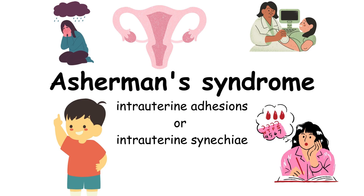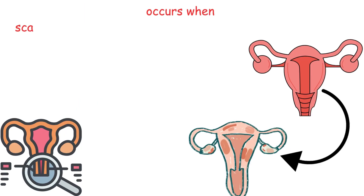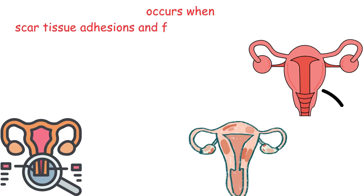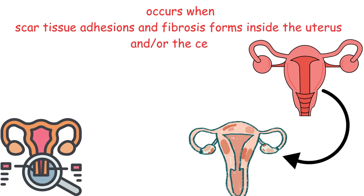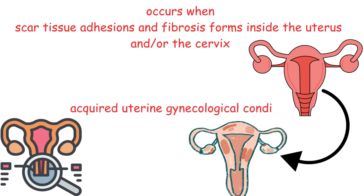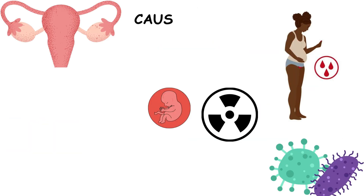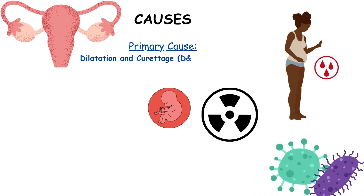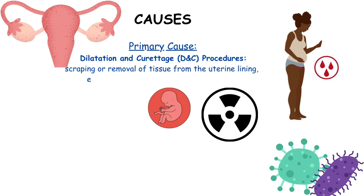Asherman's syndrome, also called intrauterine adhesions, occurs when scar tissue, adhesions, and fibrosis develop inside the uterus and cervix. It is an acquired uterine gynecological condition. The primary cause is dilatation and curettage procedures involving the scraping or removal of tissue from the uterine lining, particularly after a miscarriage or abortion.